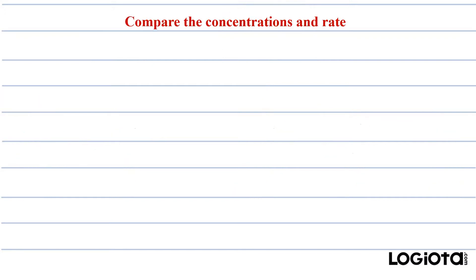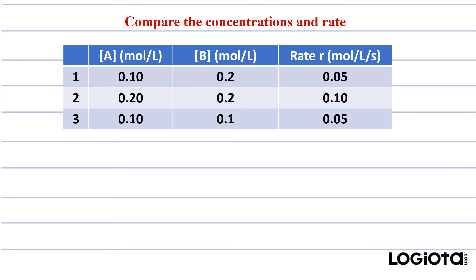Now let's see an example. In the question, a table is given where the concentrations of A and B are provided along with the rates. The numbers 1, 2, 3 mean that three experiments are done. The values under A are the initial concentrations of A in each experiment, and similarly for B. The concentration units are mole per liter. The rate for each experiment is also given with its corresponding unit.